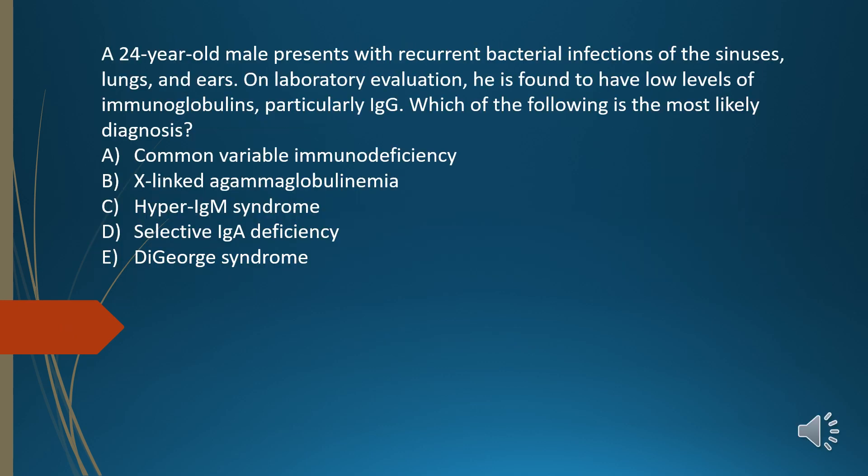A 24-year-old male presents with recurrent bacterial infections of the sinuses, lungs, and ears. On laboratory evaluation, he is found to have low levels of immunoglobulins, particularly IgG. Which of the following is the most likely diagnosis?